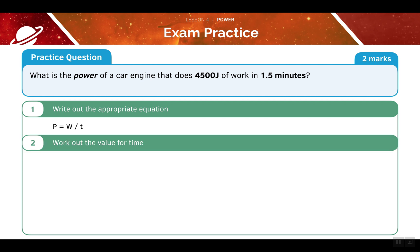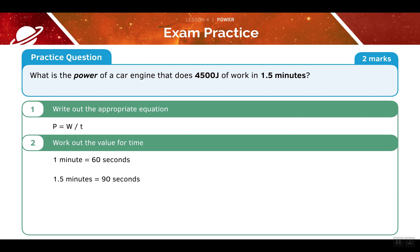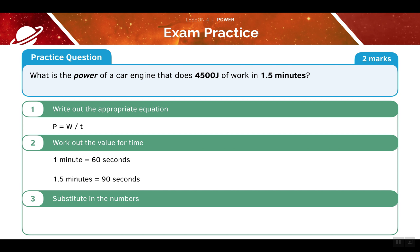Now we must work out the value for the time. In the question we've been told it lasts for 1.5 minutes, however we need to convert this into seconds. We know that 1 minute equals 60 seconds, so 1.5 minutes equals 90 seconds. Now that we have the correct values, we can substitute them into our equation: power is equal to the work done, which is 4500, divided by the time taken, which is 90 seconds, giving us a value of 50 watts.